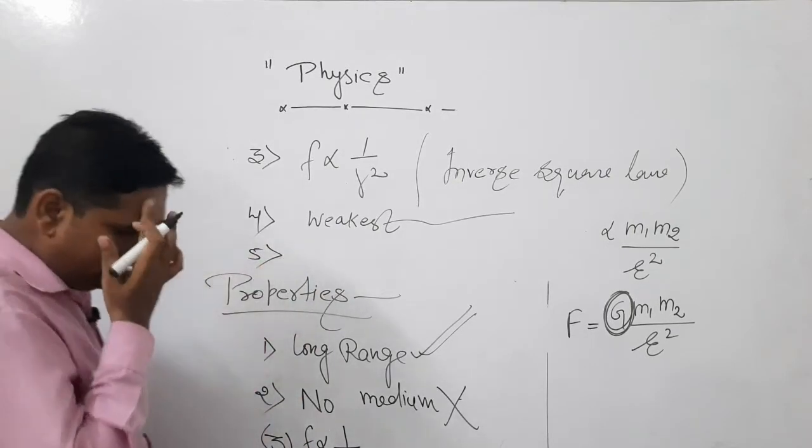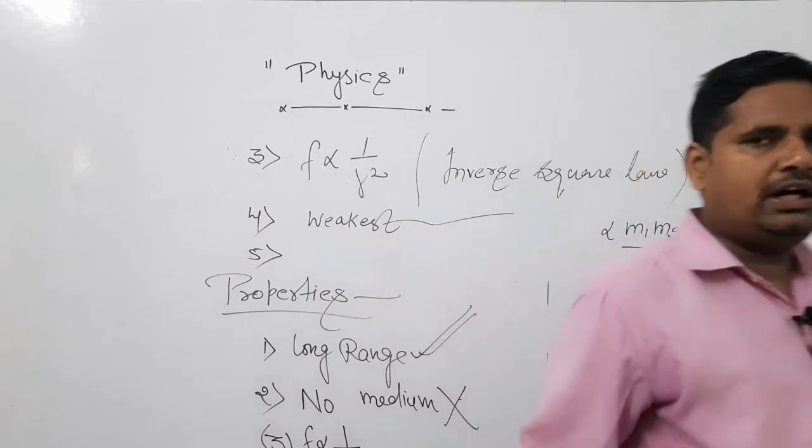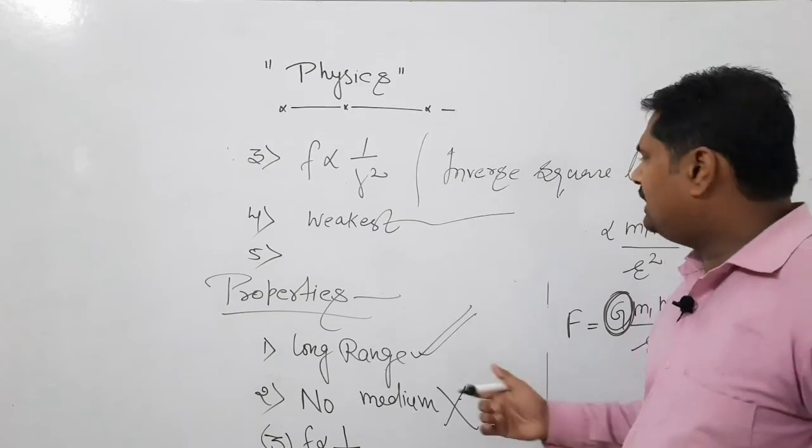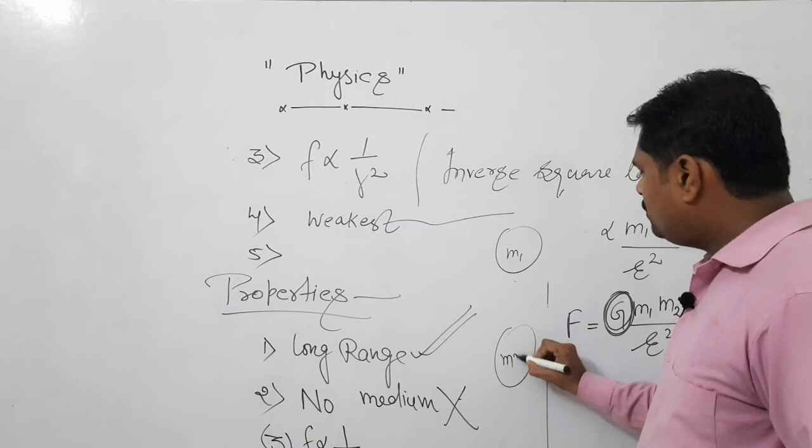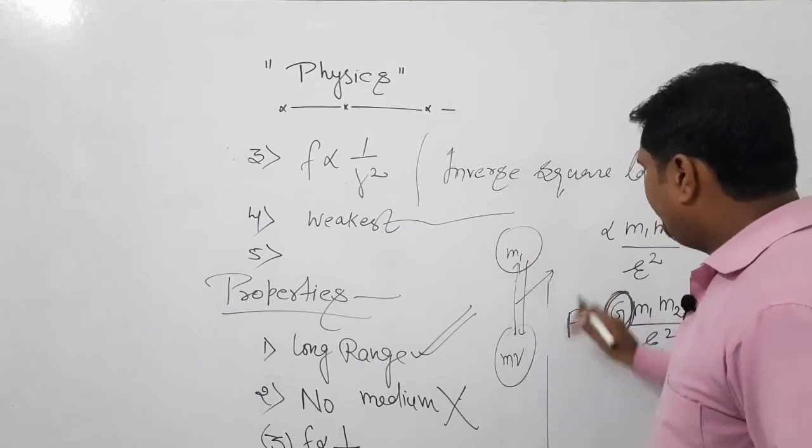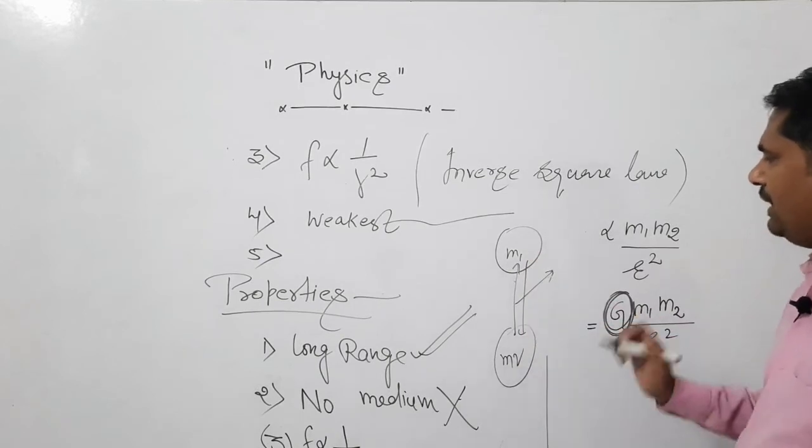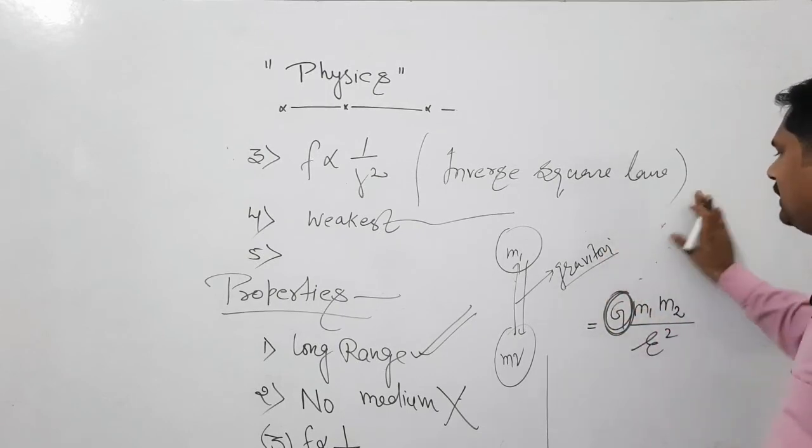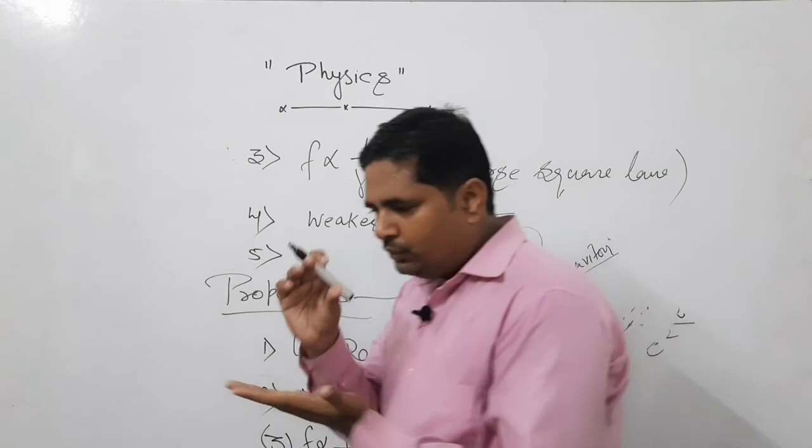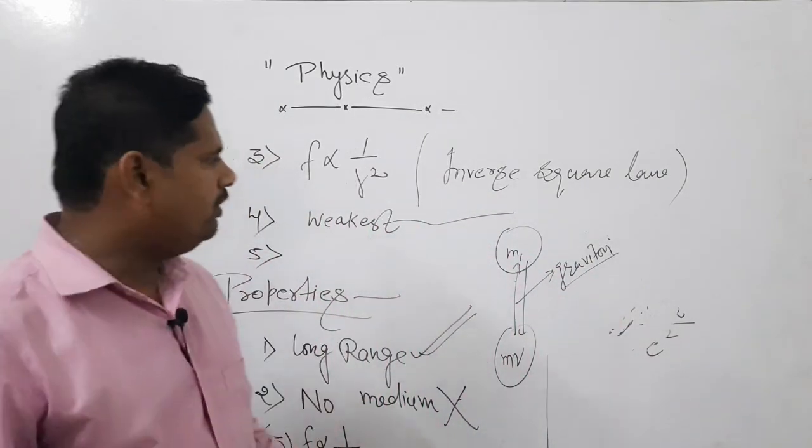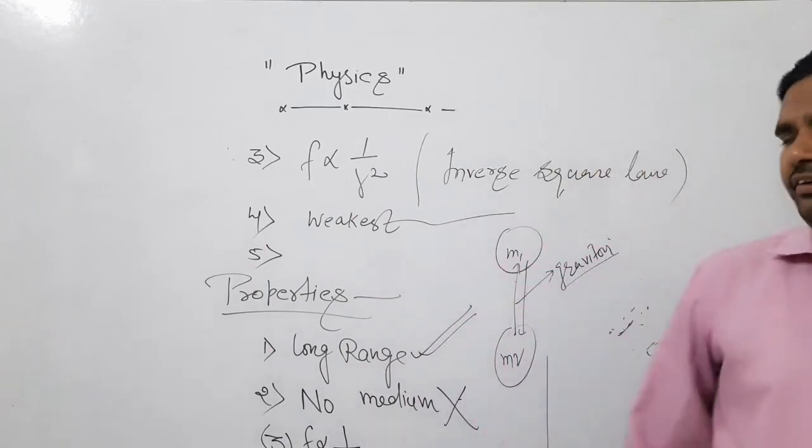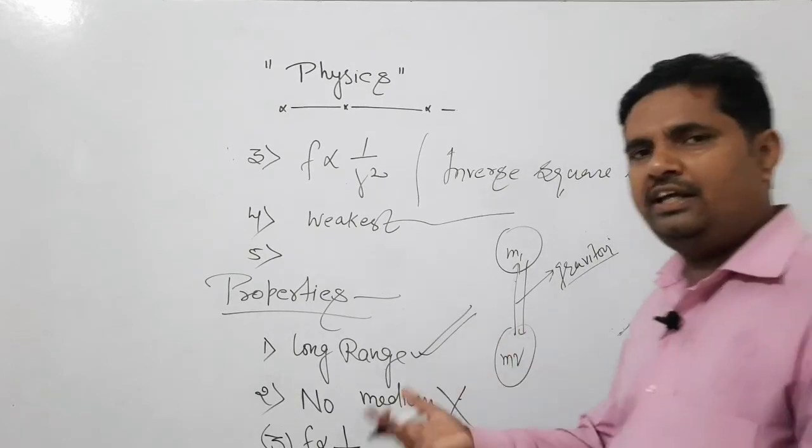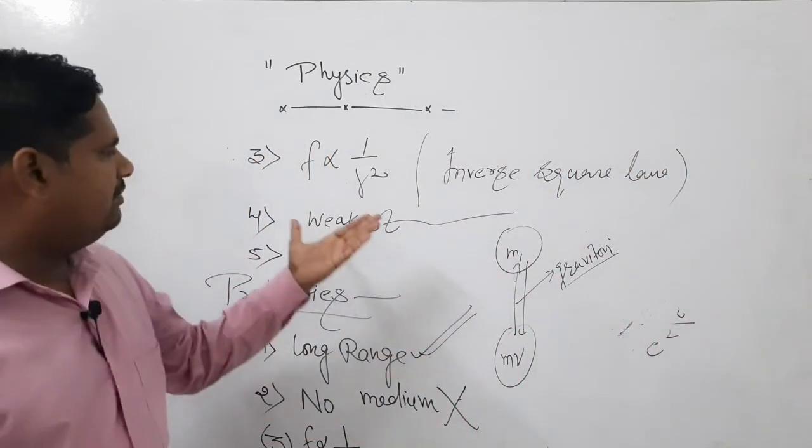And number five, the property I'm telling you is much important, but at slightly higher level. It is believed that gravitational force between two objects is due to exchange of particles that is called gravitons. Means this force occurring between two objects is due to exchange of some particles, and those particles are called gravitons. These are yet to be detected. They haven't been detected yet fully, but these are yet to be detected. They will be detected today or tomorrow.